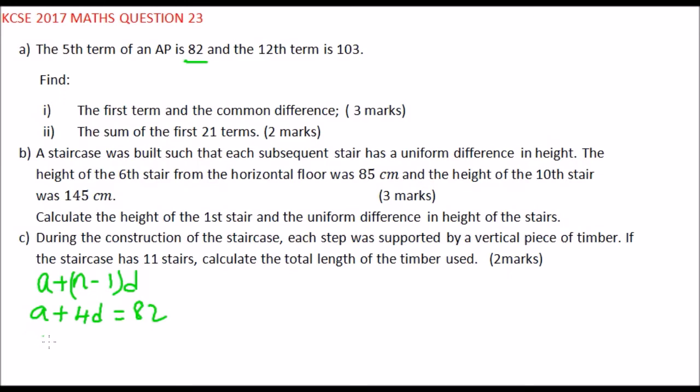Now, the 12th term is A plus 12 minus 1 is 11, D is equal to 103. These are simultaneous equations. We eliminate A. A minus A is 0, 4 minus 11 is minus 7 D. 82 minus 103, you get minus 21. So minus 7 D is equal to minus 21.